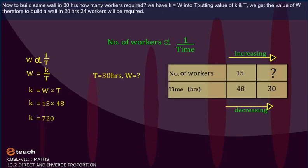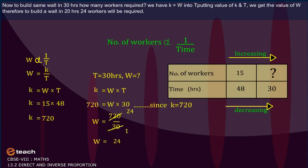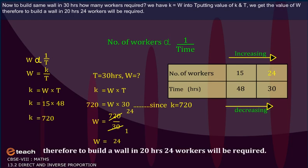Now, to build same wall in 30 hours, how many workers required? We have k is equal to w into t. Putting value of k and t, we get the value of w. Therefore, to build a wall in 30 hours, 24 workers will be required.